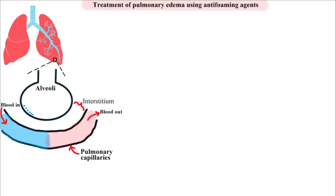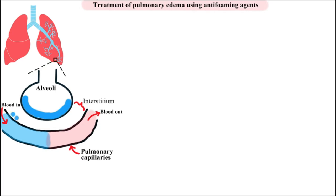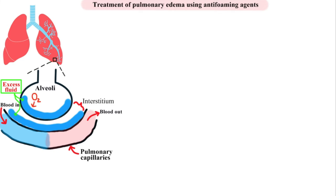Pulmonary edema is a condition caused by excess fluid in the lungs, including the airways like the alveoli as well as in the interstitium, which is the tissue between the alveoli and the capillaries. This fluid collects in the alveoli making it difficult to breathe. The diffusion rate of oxygen and carbon dioxide will decrease. The concentration of oxygen in the blood will decrease as well — a condition called hypoxemia. The concentration of carbon dioxide in the blood may increase too.